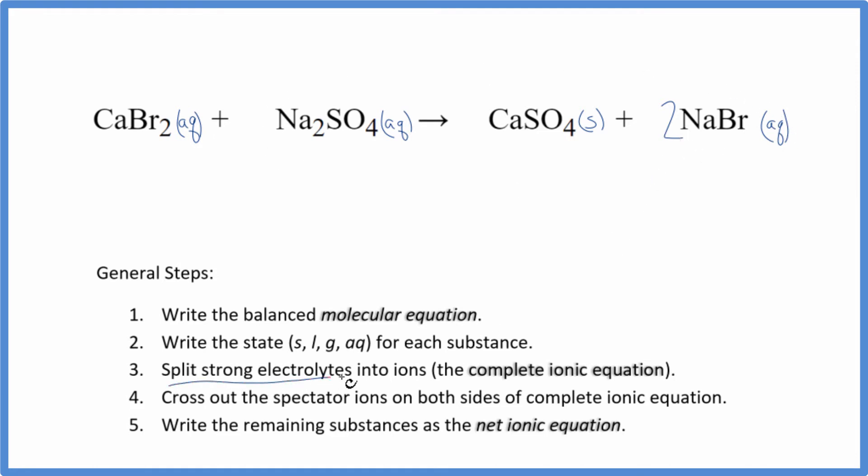Now we can split the strong electrolytes into their ions, and that'll give us the complete ionic equation. So calcium on the periodic table has a 2-plus ionic charge. It's in group 2. Bromine, that has a 1-. So I have Ca2+ plus 2 bromide ions, 2Br-. Sodium group 1, 1+, so I have 2 of those, plus 2 of those sodium ions. And then the sulfate ion, the whole thing, is 2-. It's one to remember. I have a sulfate ion, SO4 2-. These are the reactants.